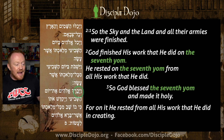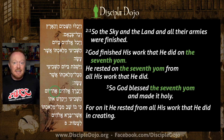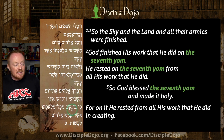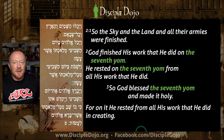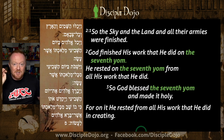Verse three: God blessed the seventh yom. In this third instance, it has the definite direct object marker instead of the definite article, but it's the same concept — definite, and this is what receives the action of blessing. He blessed eth yom ha-shevi'i — the seventh day. Not only do you have the definite markers, but you have it repeated three times. Tripartite repetition: the seventh day, the seventh day, the seventh day. When something is repeated in scripture it is for emphasis, and when you see it three times, that's a blaring, flashing sign.